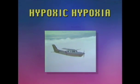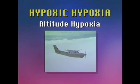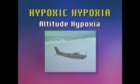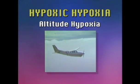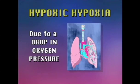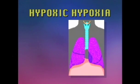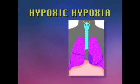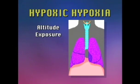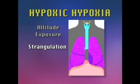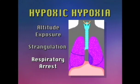Hypoxic hypoxia is the most common form of hypoxia in aviation and occurs due to a drop in oxygen pressure at the lung level. Hypoxic hypoxia can be caused by a decrease in the pressure of oxygen in the inspired air — air that can result from altitude exposure, strangulation, or respiratory arrest.